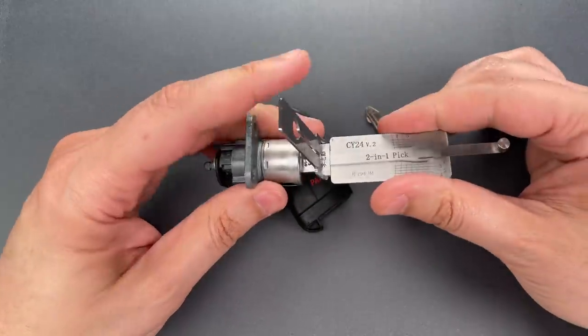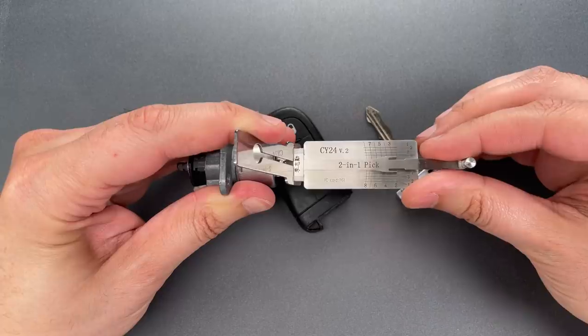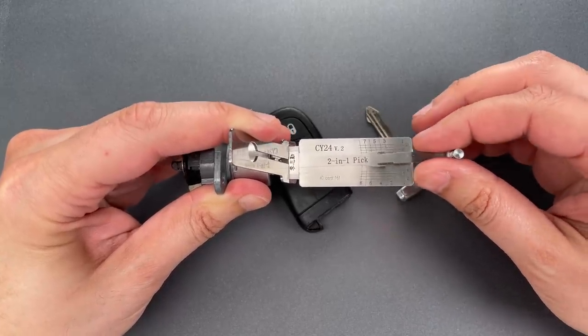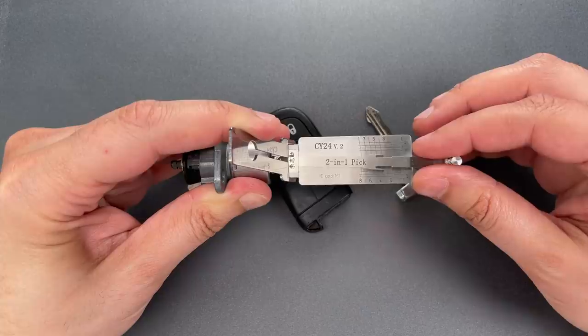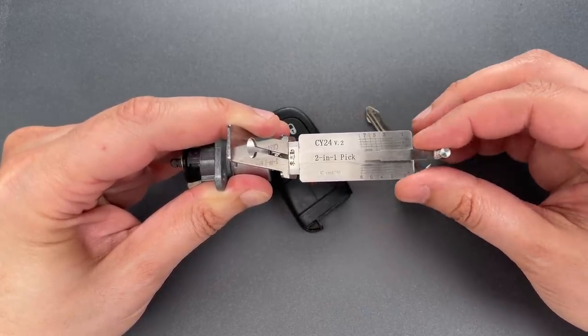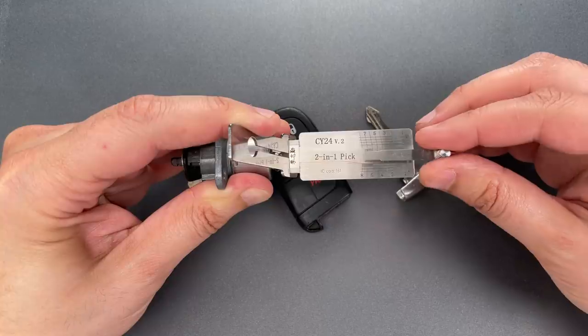I'm going to use this tab to apply torque to the core and we'll start on wafer 2, little click there. Nothing on 3, nothing on 4, 5 is binding, click there, 6 is binding, click out of 6.